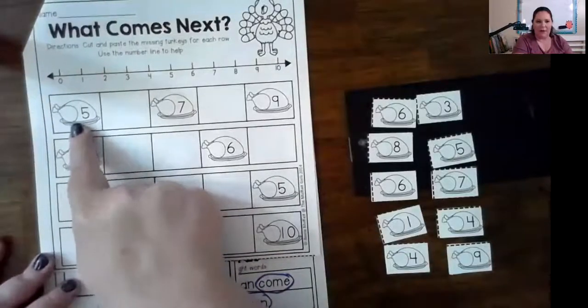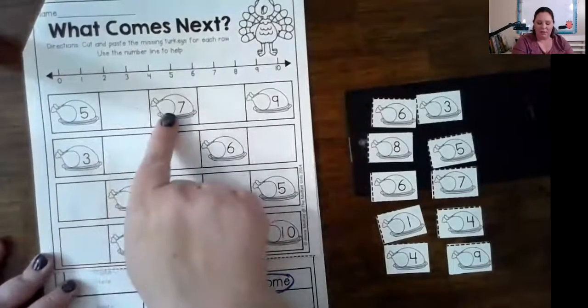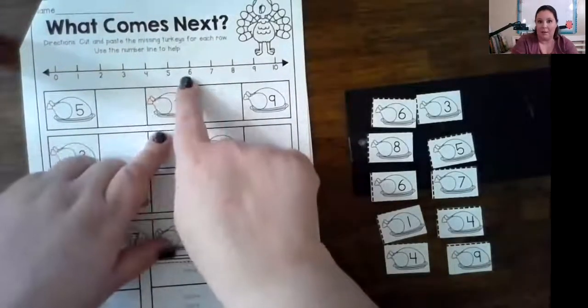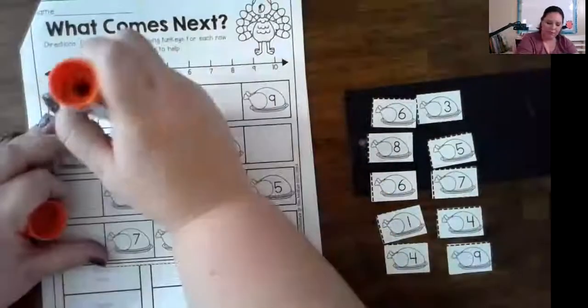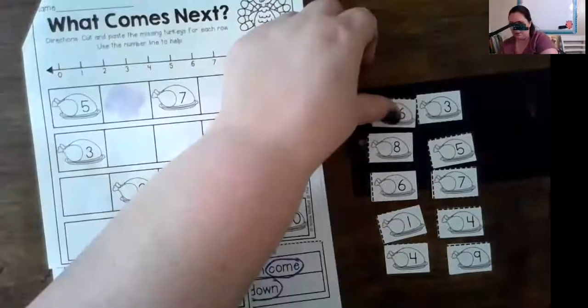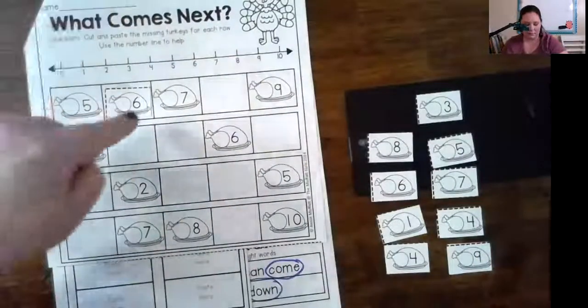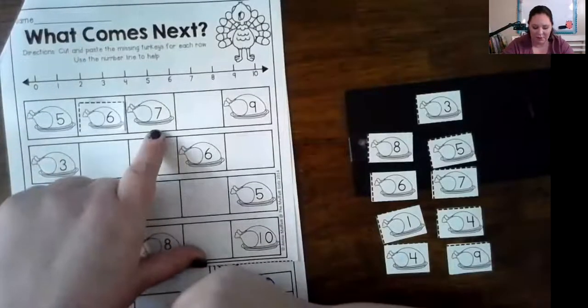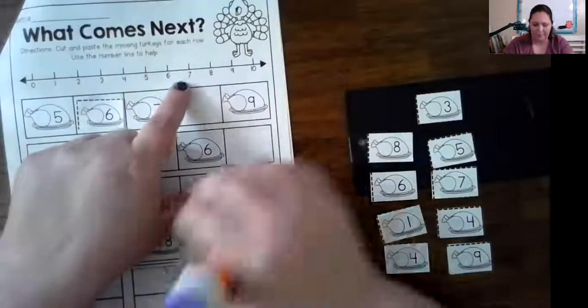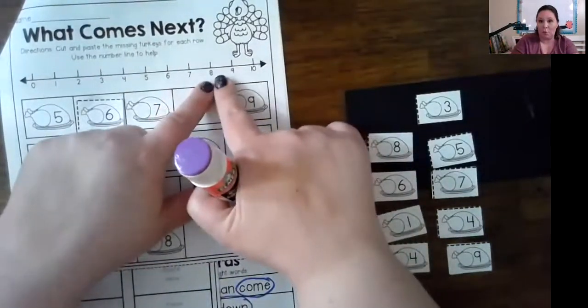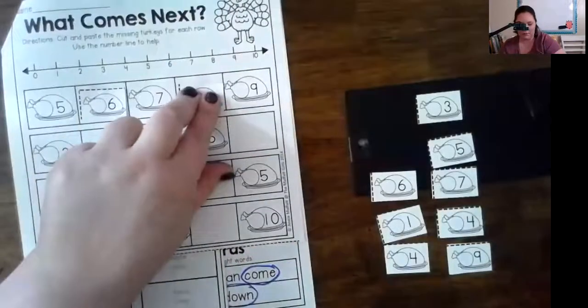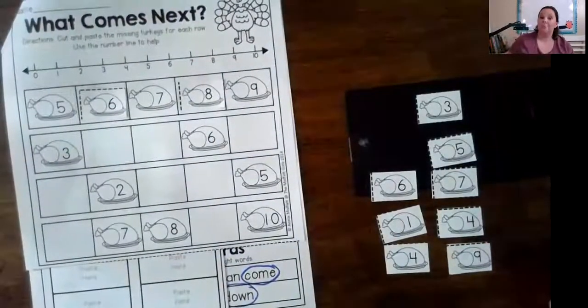What number comes after five and before seven? After five and before seven. There's a six. So I need to put a turkey with the number six. And then what's the number that comes after seven but before nine? After seven, before nine, there's eight. So I'm going to put a turkey that has a number eight right there. Yeah.